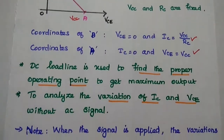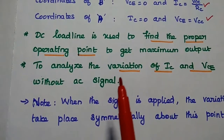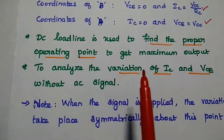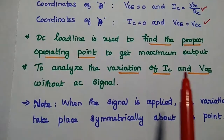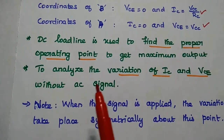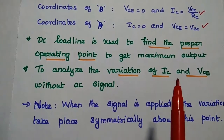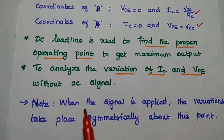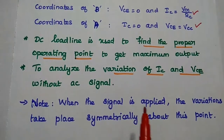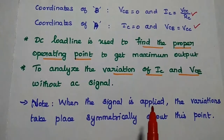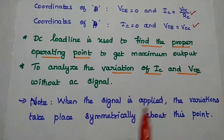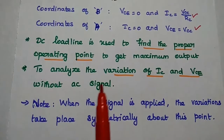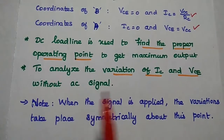Why do we need this DC load line? The major application of the load line concept is to find out the proper operating point to get maximum output from the transistor circuit. It is also used to analyze the variation of output parameters without AC input signal. When AC input signal is applied, the variations take place symmetrically about the operating point.